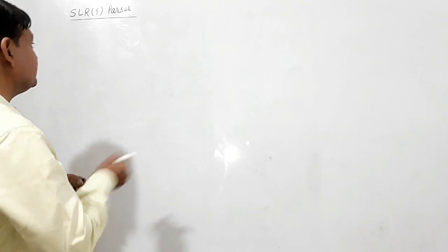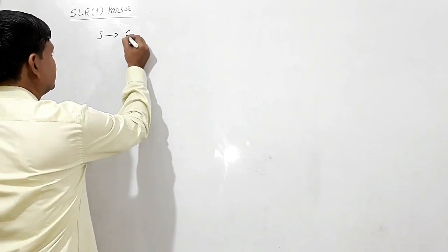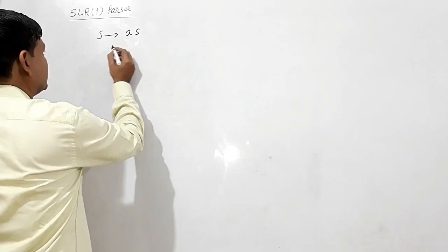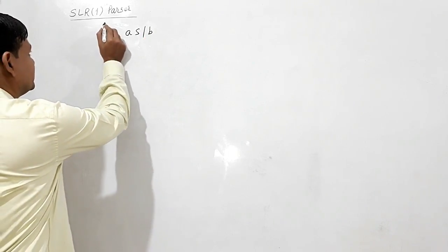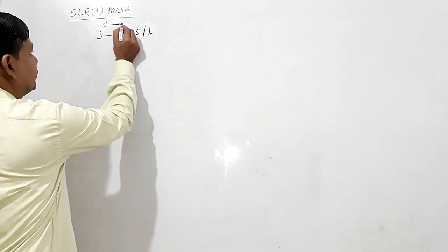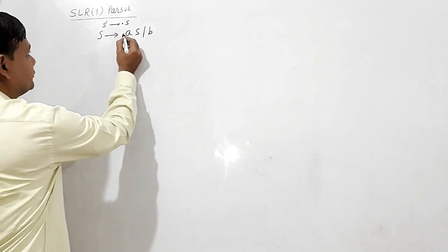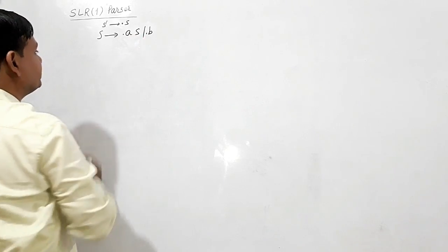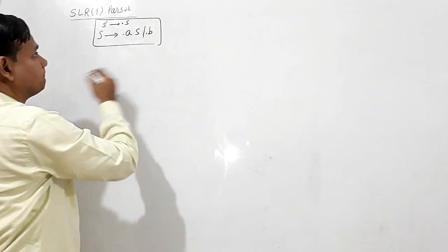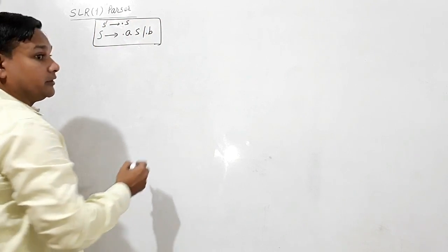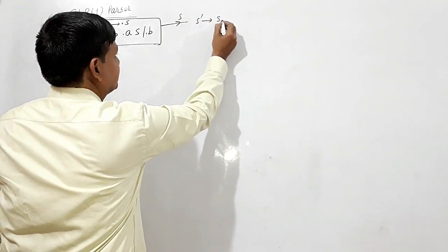We shall see here. If a grammar is given — S is giving AS or B — a very simple grammar. I will have to use the augmented production: S' → .S. I have to write the closure of S. S is giving .AS or .B.